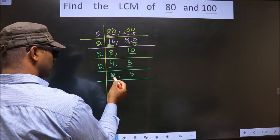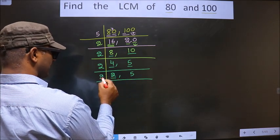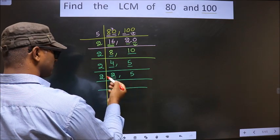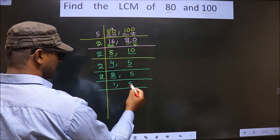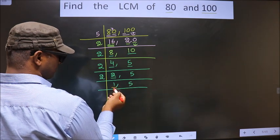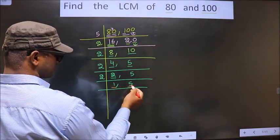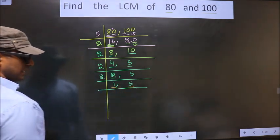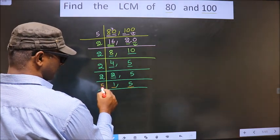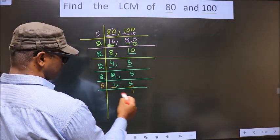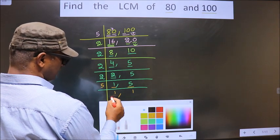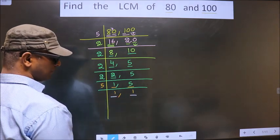Now here we have 2. 2 is a prime number, so we take 2 ones, which is 2. 5 is not divisible by 2, so we write down 5 as it is. Now here we got 1, so we focus on to the next number, that is 5. Here 5 is a prime number, so we take 5 ones, which is 5.